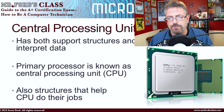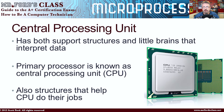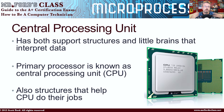So, speaking of that, let's actually talk about the CPU. The computer has both support structures and the little brain that interprets data — i.e., the CPU, i.e., the brain. The primary processor is known as the central processing unit. You might hear me throw the term CPU out quite a bit — that's basically the central processing unit. We don't like to say big words; we always like to abbreviate them. And there are other structures that help the CPU do its job.